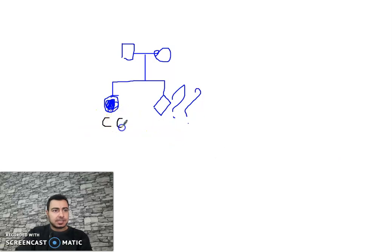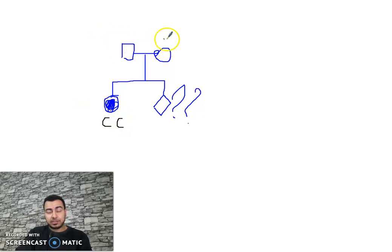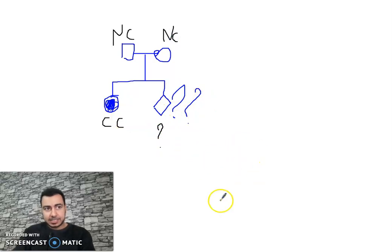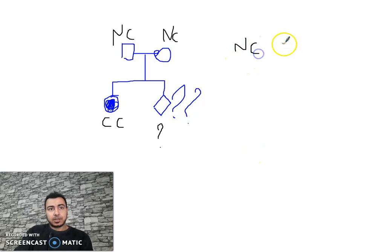The affected child is CC, and since the parents are phenotypically normal, each parent must be NC. So we set up the cross: NC × NC.